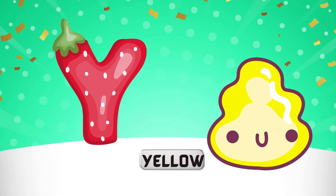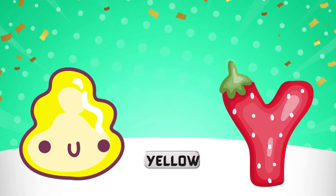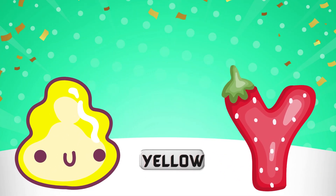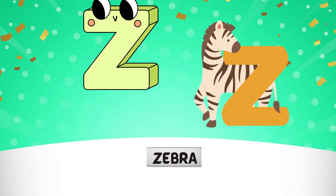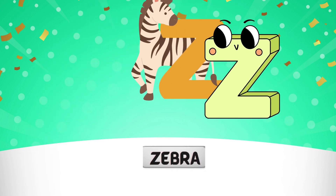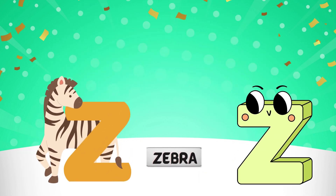Y is for yellow, ye-ye-yellow. Z is for zebra, z-z-zebra.